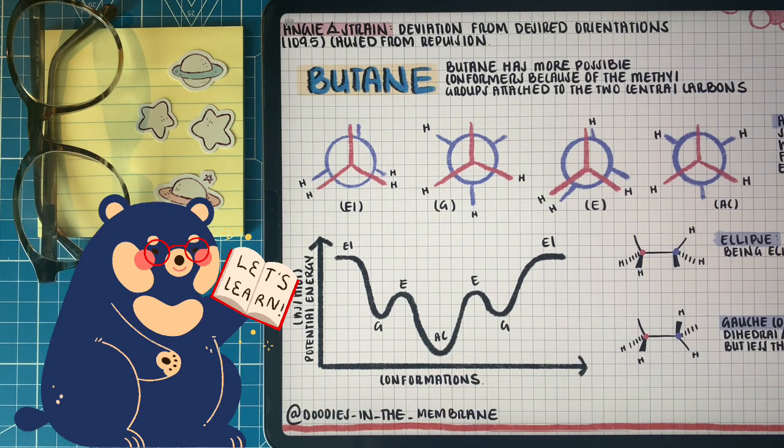First, at E1, we have where both the methyl groups are eclipsing one another. This is going to be the highest of energy because, first of all, a methyl group compared to a hydrogen is a lot bigger in comparison. So it's going to have a lot more repulsive forces. Then, as we start moving that back methyl group away, we're going to get into a state that's called gauche.